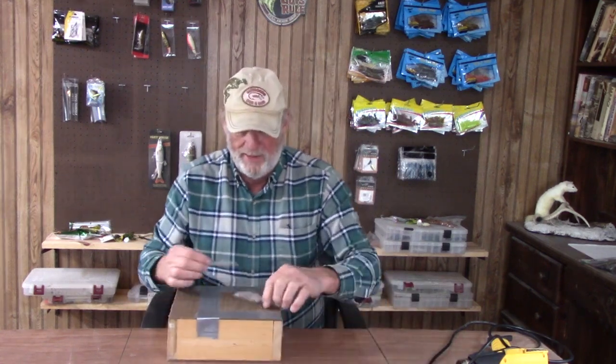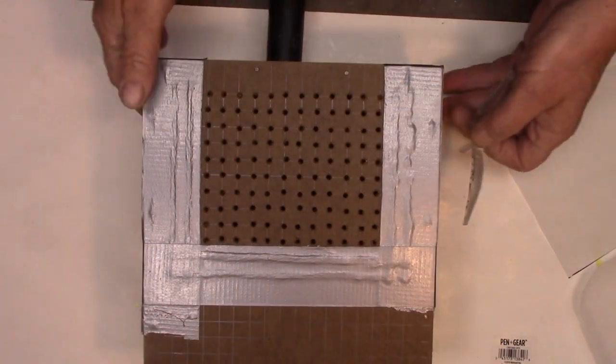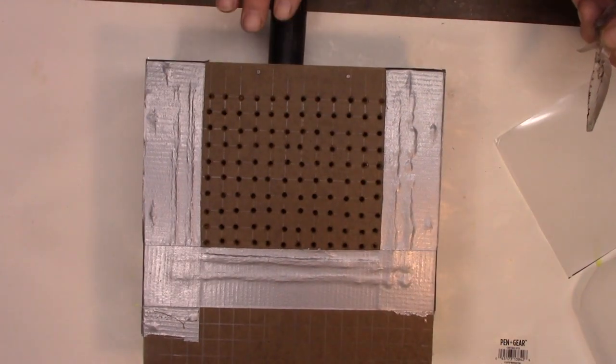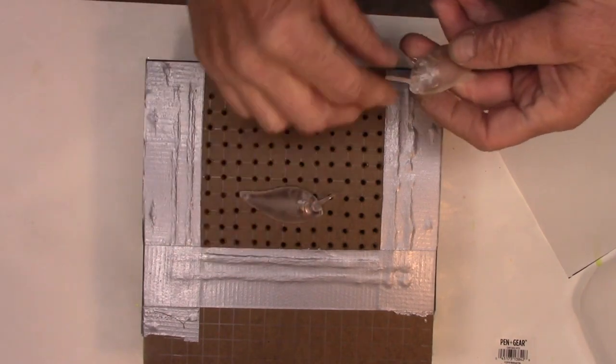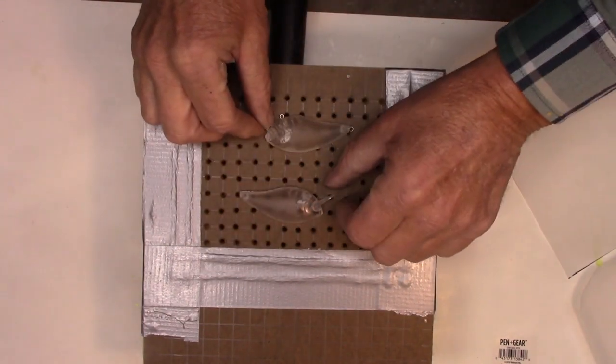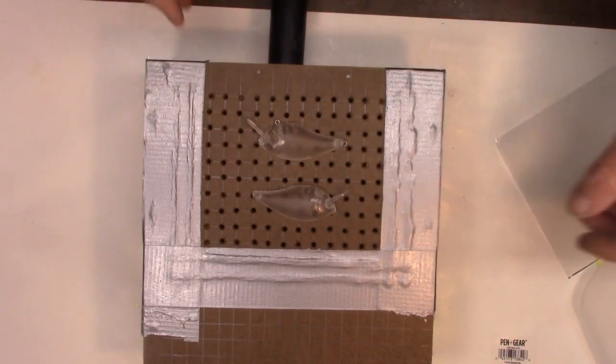All right, I'm gonna move this whole thing over to the workbench and I'll show you how we make the stencil. All right, here we go. We got the box here, I've got my shop vac hooked up to it. So we're gonna take our lure halves, we're just gonna lay two of these down. We can do two at a time.